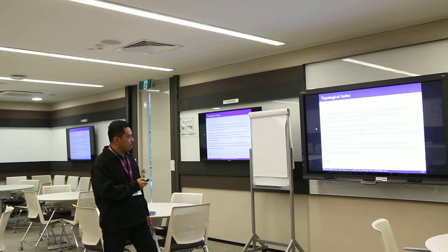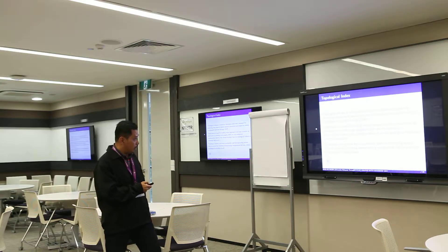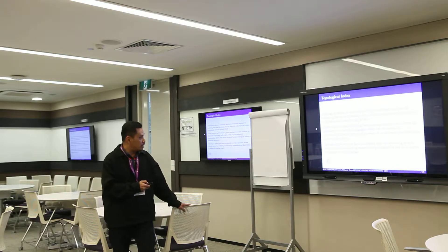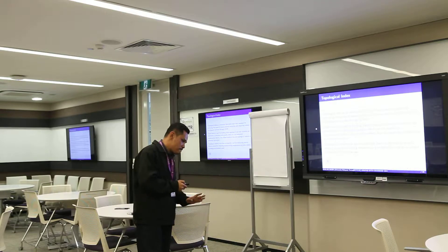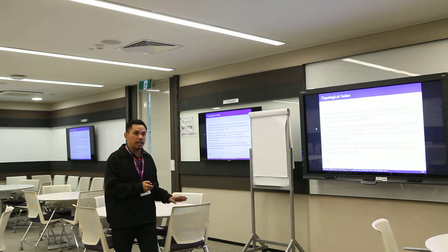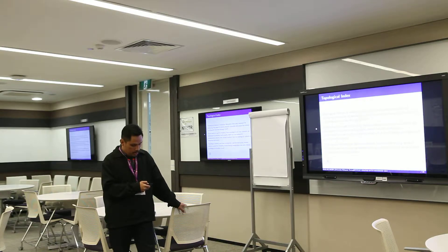A new concept has been developed to transform graphs — which are non-numerical mathematical objects — into related numbers. These are called topological indices or molecular descriptors. They are simply numeric values assigned to the corresponding graph of a chemical compound.